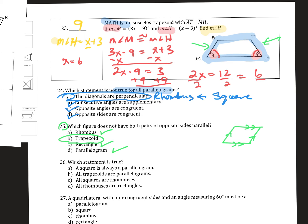Number 26. Which statement is true? A square is always a parallelogram - that's true. All trapezoids are parallelograms - we just said that's not true because only the top and bottom sides are parallel, but all sides have to be parallel to be a parallelogram. All squares are rhombuses - that's true also. All rhombuses are rectangles - that's not true. So you've got two choices here that are true, A and C.